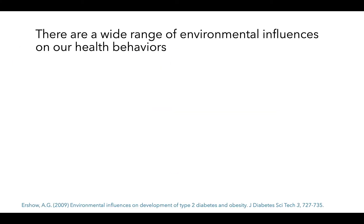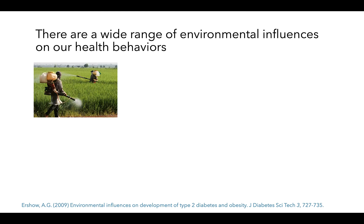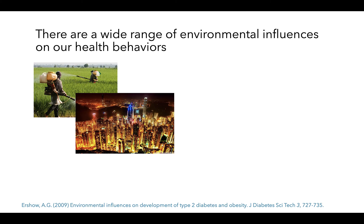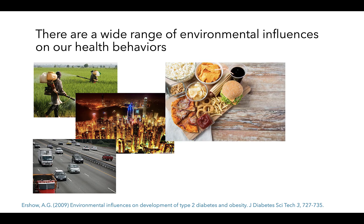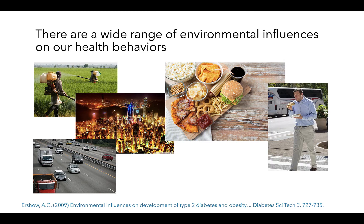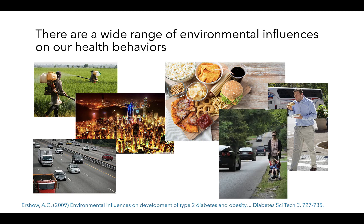Over the past few decades, much research has aimed to better understand how our environments may influence our health behaviors, and a wide range of environmental features have been highlighted, including endocrine disruptors such as pollutants, circadian rhythm and sleep disruptors such as ambient light and noise from our neighborhoods, labor and time-saving technologies such as cars and appliances, prepared foods that are energy dense and nutrient poor, social acceptance of frequent eating in almost any context, and features of our built environment such as a lack of sidewalks or neighborhoods that are not safe for outdoor activity.